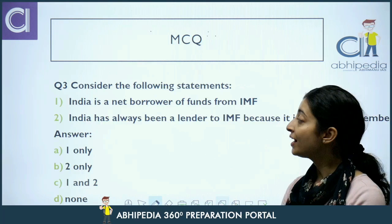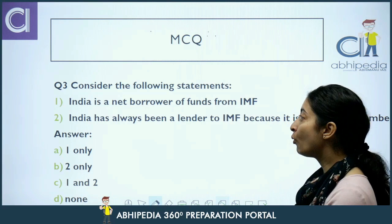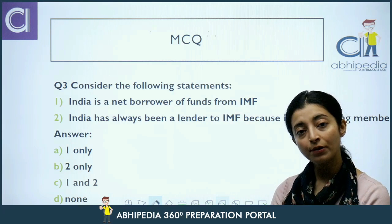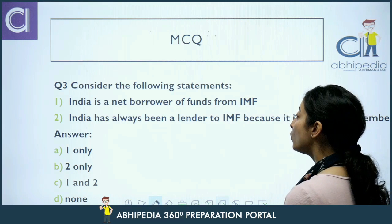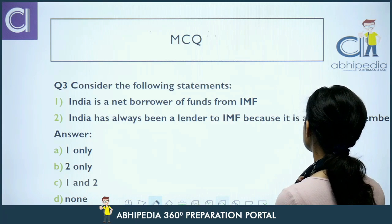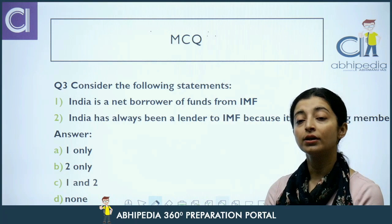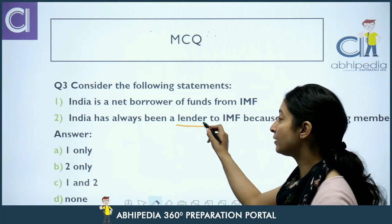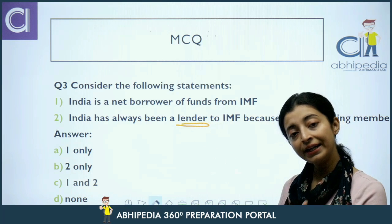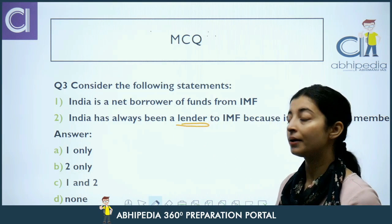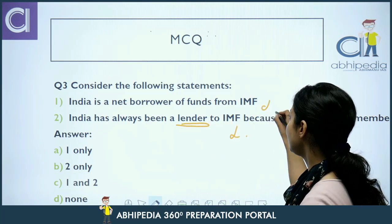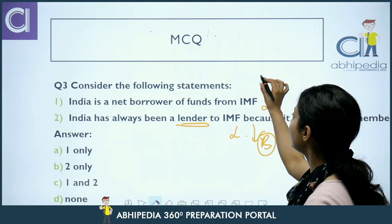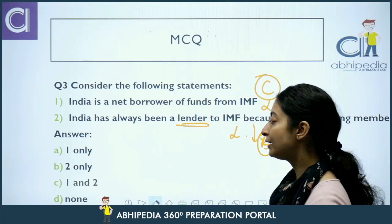Last question — (1) India is a net borrower of funds from IMF. (2) India has always been a lender to IMF because it is a founding member. Both these statements are incorrect. India ne in the past borrowing bhi ki hai, aur India is waqt net contributor hai — but India has not always been a lender. So the correct answer is 'None of the above' (neither is correct).